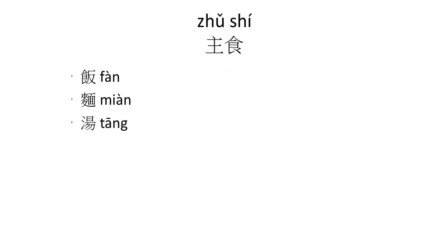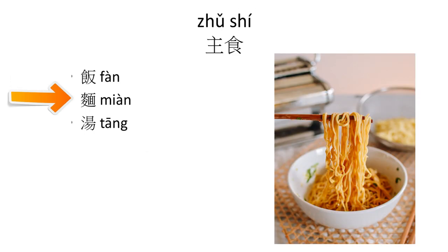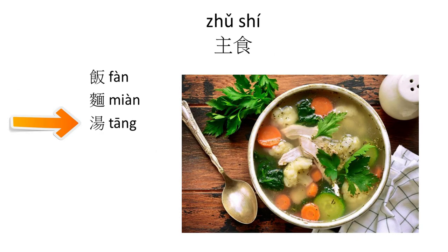主食 means main food. We have 飯 — so if you want rice, definitely choose this one. 麵 means noodle. And 湯 means soup — again, you can see the water radical in 湯.